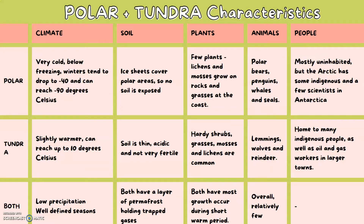Tundra is slightly warmer and can reach up to 10 degrees Celsius. The soil is thin and acidic and not very fertile. There are hardly any shrubs, grasses or mosses, and lichens are common. In terms of animals, there are lemmings, wolves and reindeer.